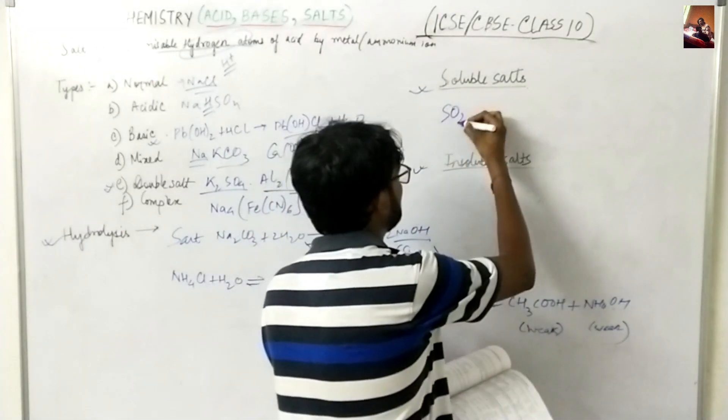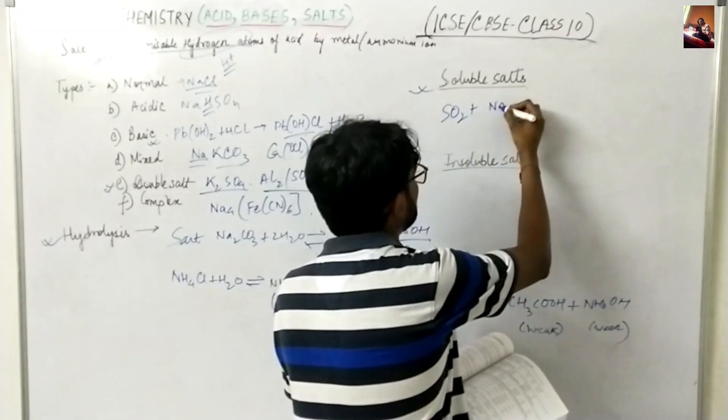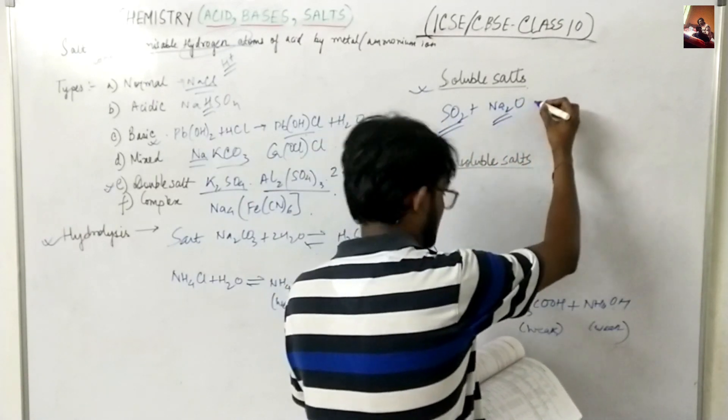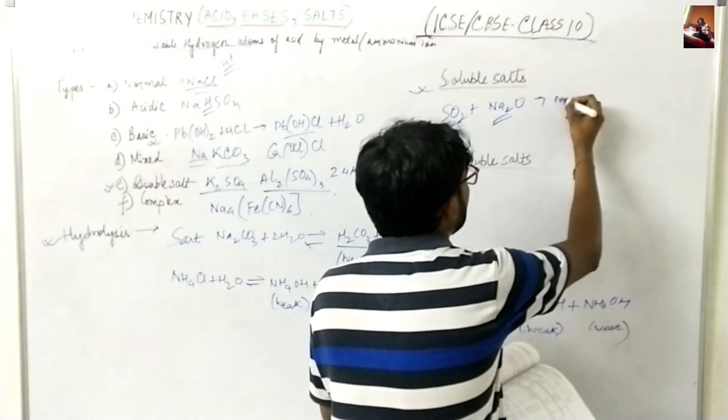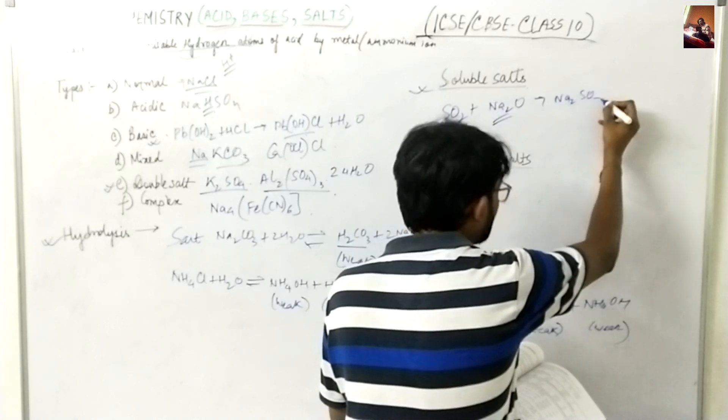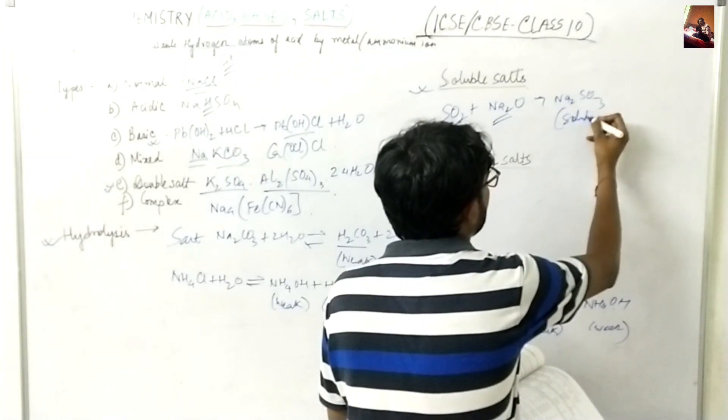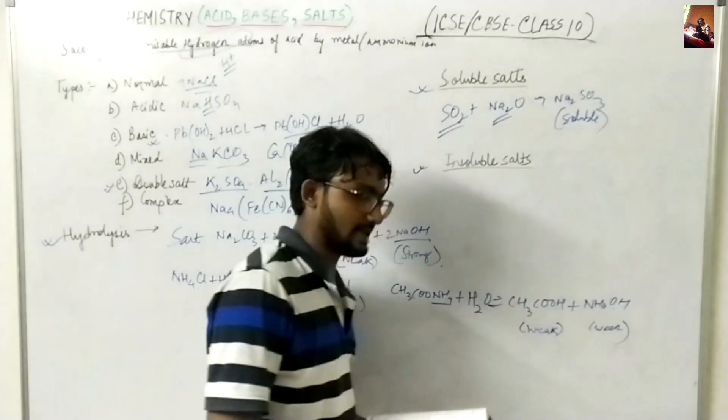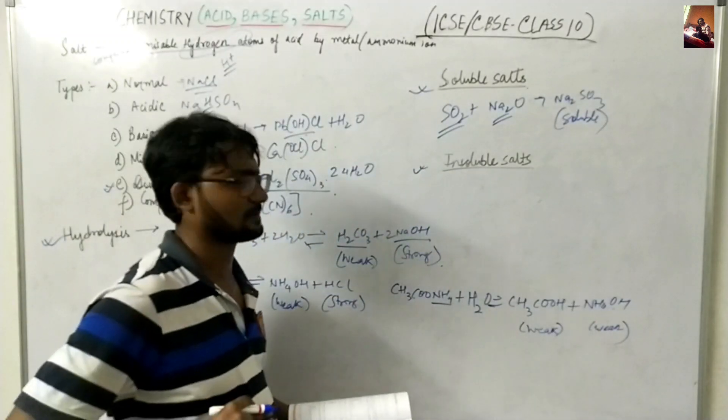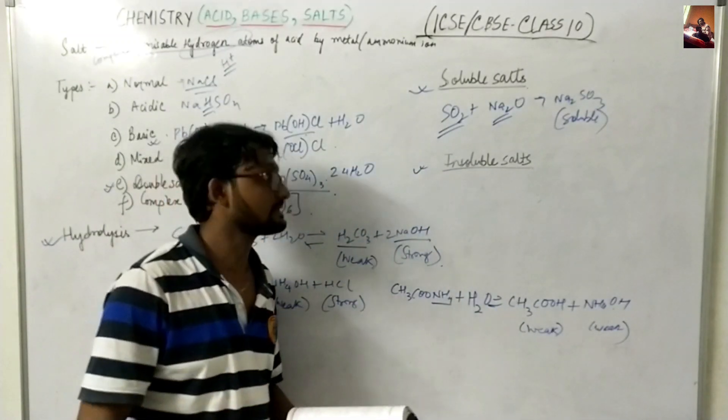I will give you one example like SO2 plus Na2O. So this is acidic oxide, this is basic oxide, and it will give you Na2SO3 that is soluble in water. I am trying to give you guys as much examples as possible. As much as I can write over here the number of questions.